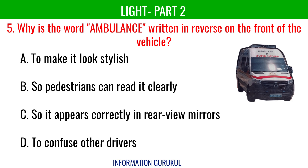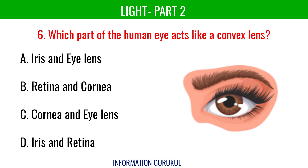Why is the word ambulance written in reverse on the front of the vehicle? So it appears correctly in rear-view mirrors. Which part of the human eye acts like a convex lens? Cornea and eye lens. They help in focusing the light beam entering the eye.